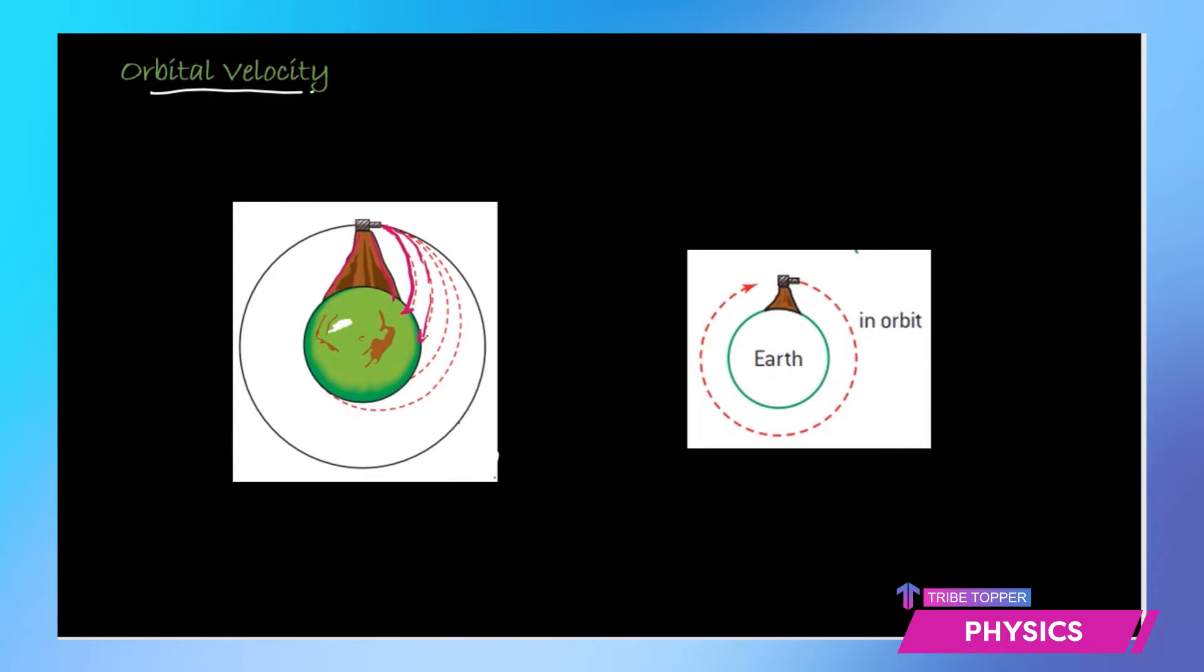You hit it with still higher velocity you reach still farther. So that means if you go on increasing the speed of launching or the speed of firing, the range of that bullet will keep on changing.